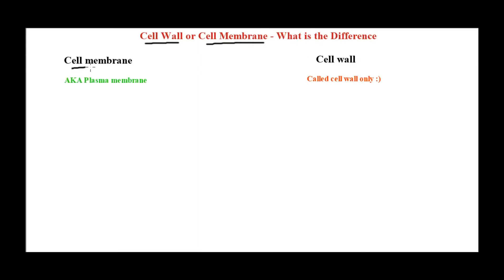The cell membrane is also known as plasma membrane, so wherever you read plasma membrane or cell membrane, they are the same thing. The cell wall, on the other hand, is called cell wall only — there is no other name for it.